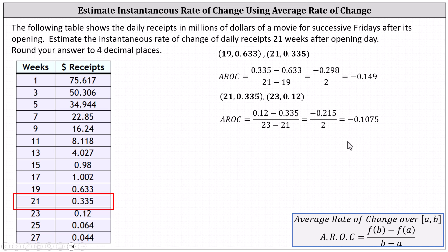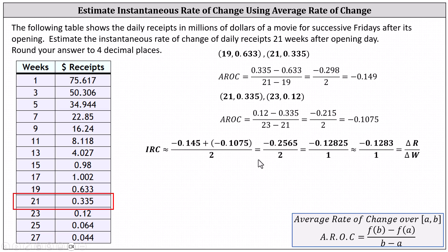To estimate the instantaneous rate of change at week 21, we average these two average rates of change by adding them and dividing by two. This gives us negative 0.12825.